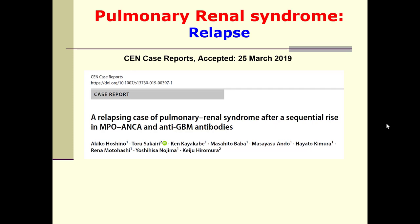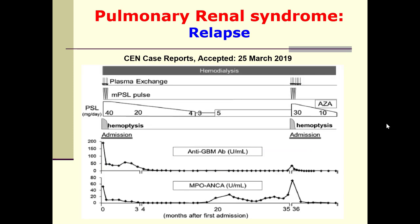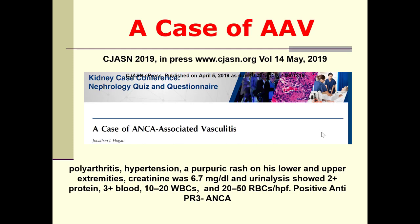Pulmonary renal syndrome: this is a case of relapse with sequential rise in MPO-ANCA and anti-GBM antibodies — double serology positive — but ultimately dialysis was required and the kidney did not recover.